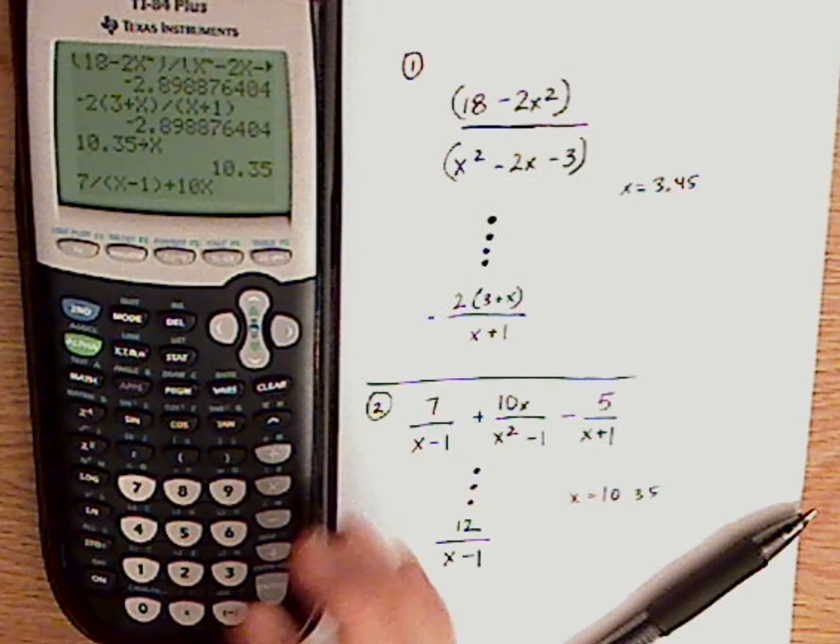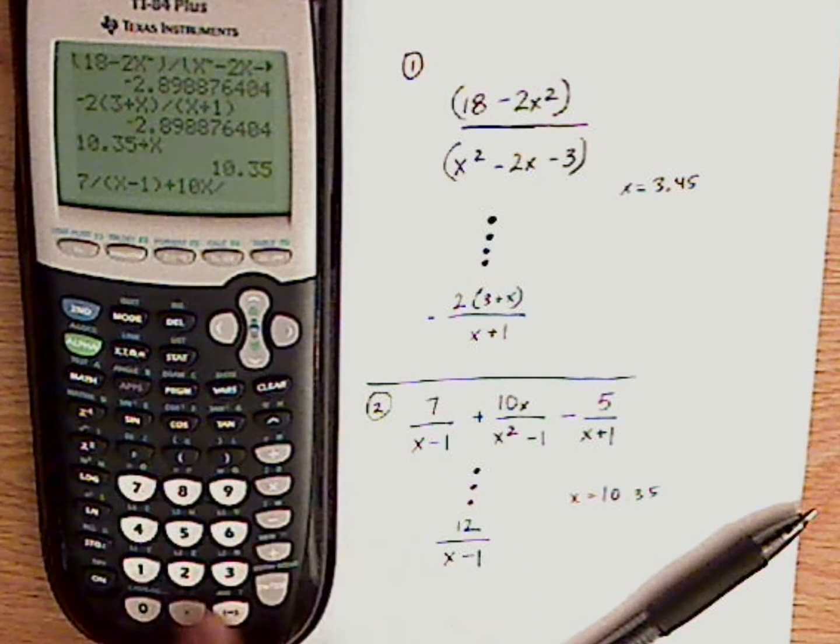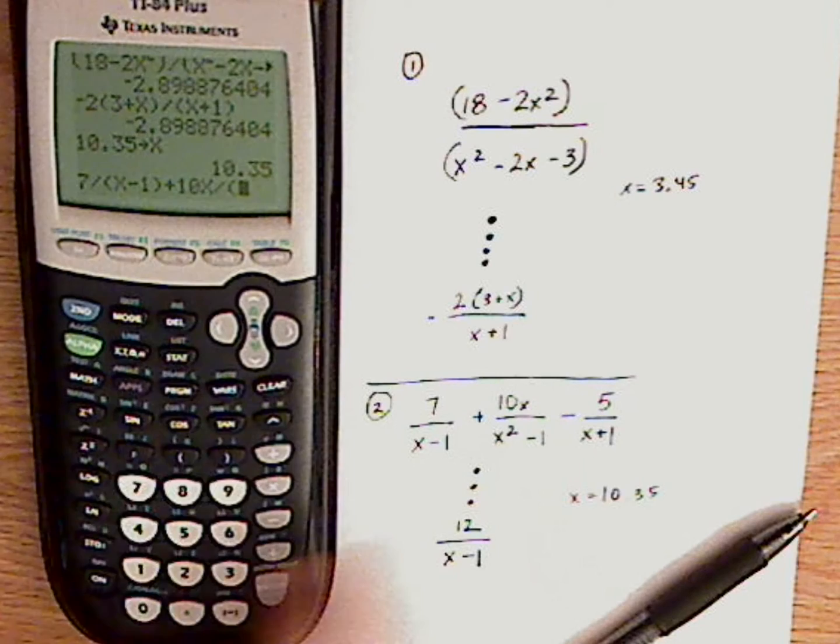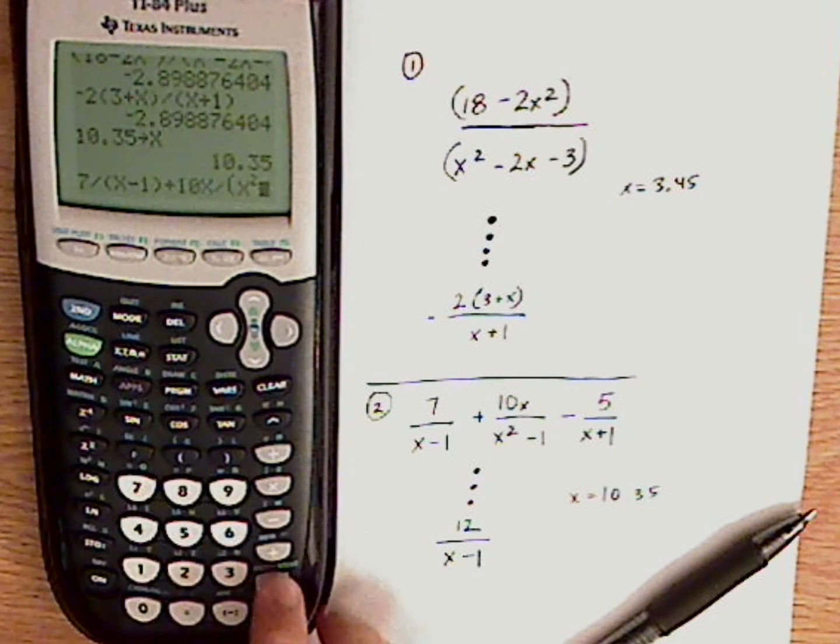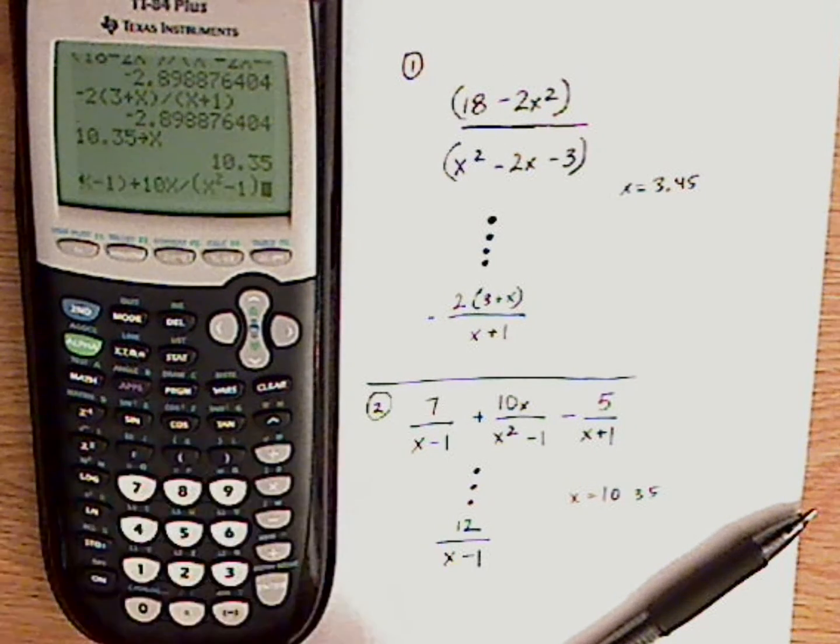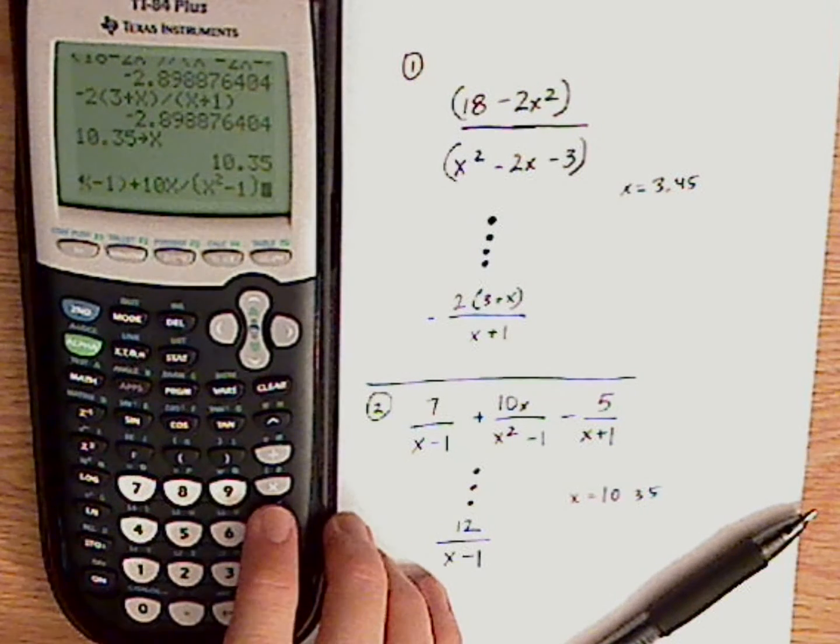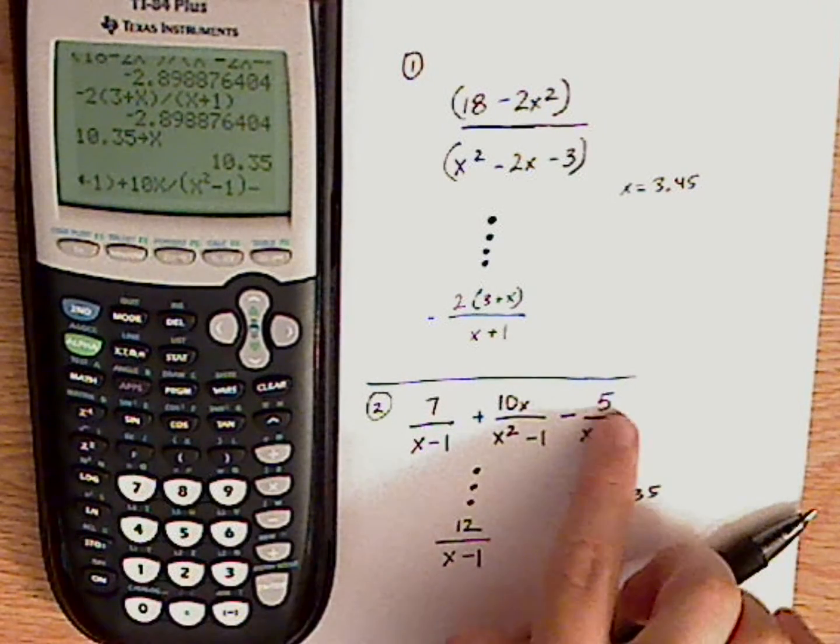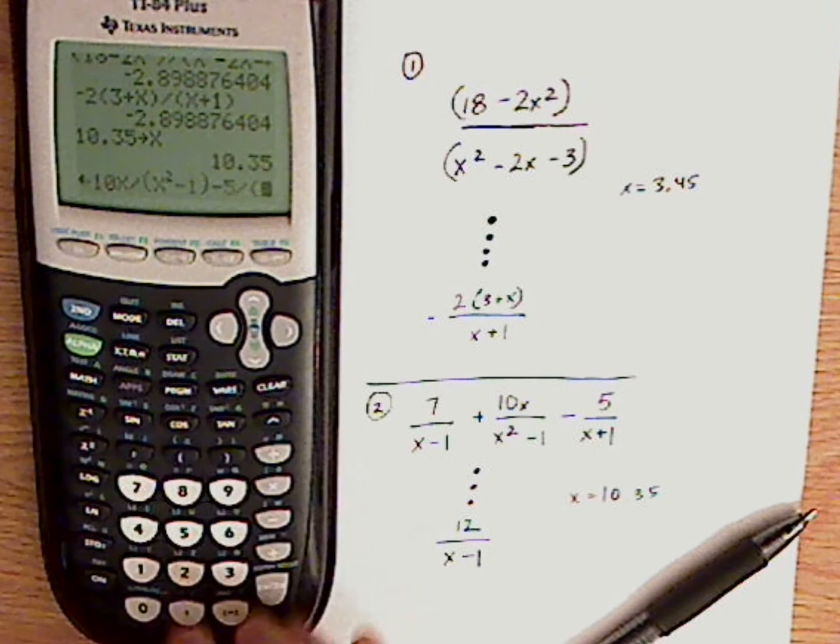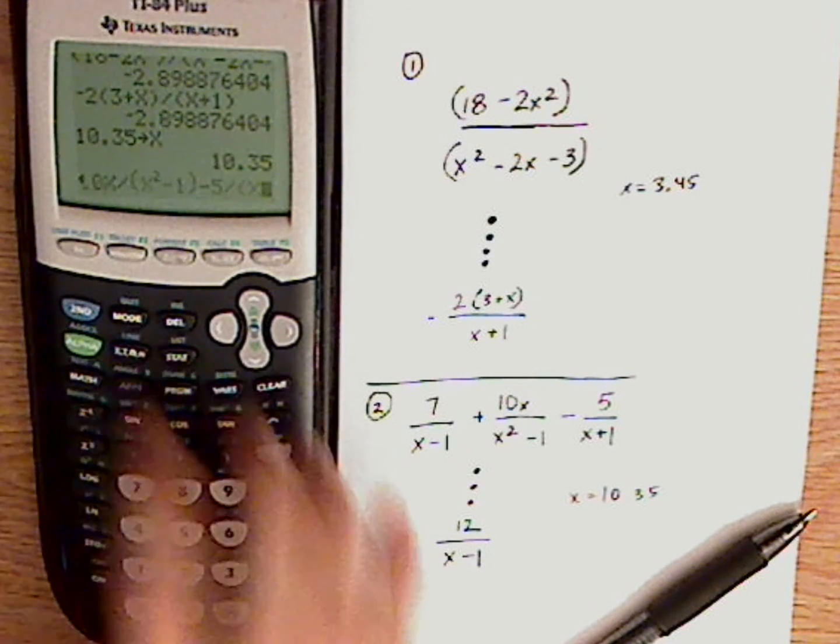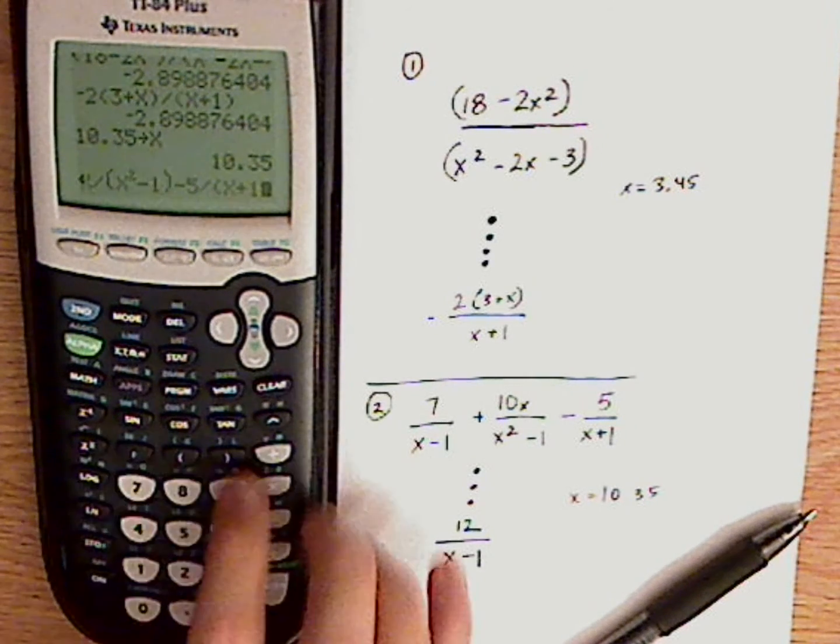I do need parentheses around this. Open parentheses, x squared minus 1, close parentheses. Type in the last one. Minus 5 over parentheses x plus 1, close parentheses.